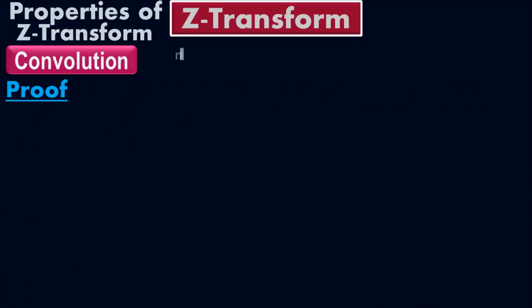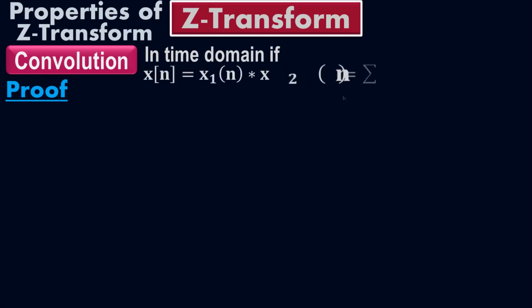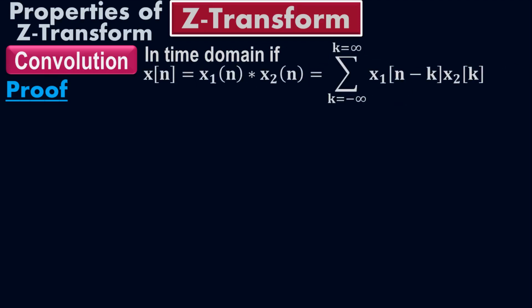We're going to prove that the left side equals the right side. In the time domain, if X(N) equals X1(N) convolved with X2(N), it equals the summation of X1(N minus K) times X2(K), where K goes from negative infinity to positive infinity. The signal X2(N) is in the time domain.